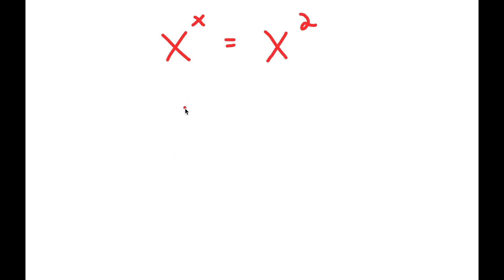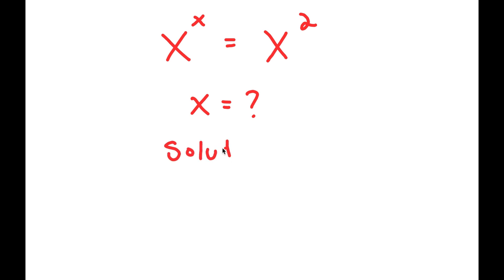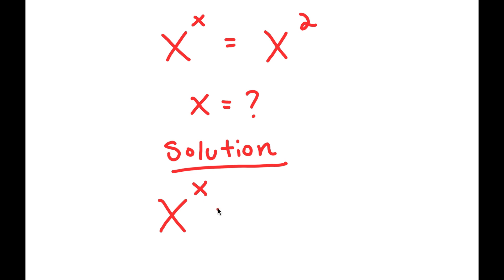In this video, I'm going to be solving the equation x to the power of x is equal to x to the power of 2. My only variable in this equation is x, so that's obviously the variable I'm going to be solving for. And now for my solution — I'm going to first write my equation down here: x to the power of x is equal to x to the power of 2.